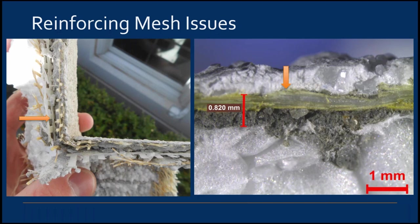Delamination of the finish coat and exposure of the reinforcing mesh can occur if the mesh is near the outer surface of the base coat. It is very important that the reinforcing mesh is embedded into the wet base coat and completely encapsulated on both sides to maintain proper performance with regard to water, crack, and fire resistance.